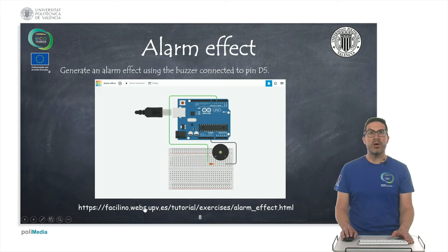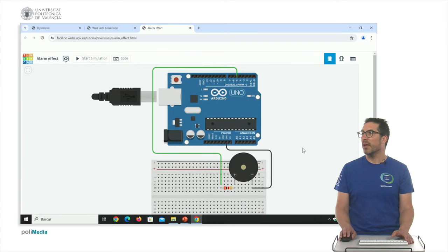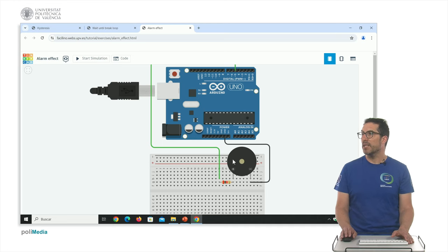This is the circuit that I have used for this exercise, in which is the buzzer connected to a resistor that is connected to pin D5. And if I press the simulation, the sound of the buzzer is a little bit weird here because of the simulator, but in a real buzzer, in a real circuit, it will sound as an alarm effect.